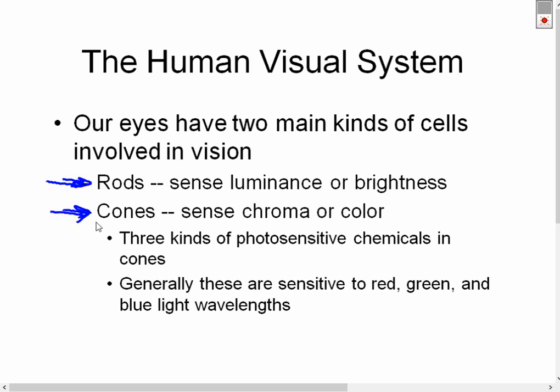The other cells are cones, and cone cells actually sense chroma or color. Light is a form of emitted energy that travels in specific wavelengths. It's those wavelengths that we see and perceive as colors. The entire spectrum of light, different wavelengths mean different colors, and the cones actually sense those wavelengths.